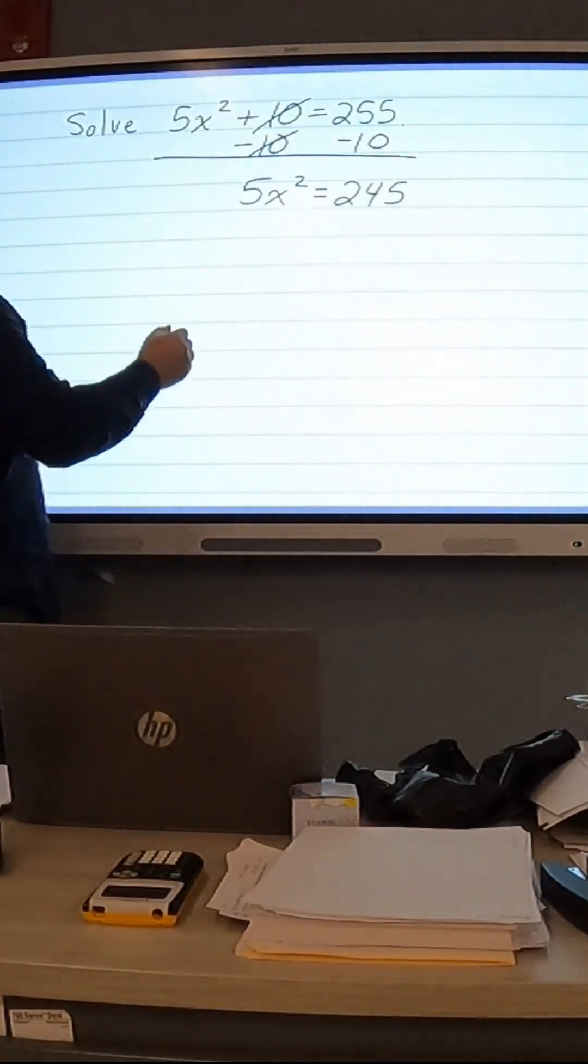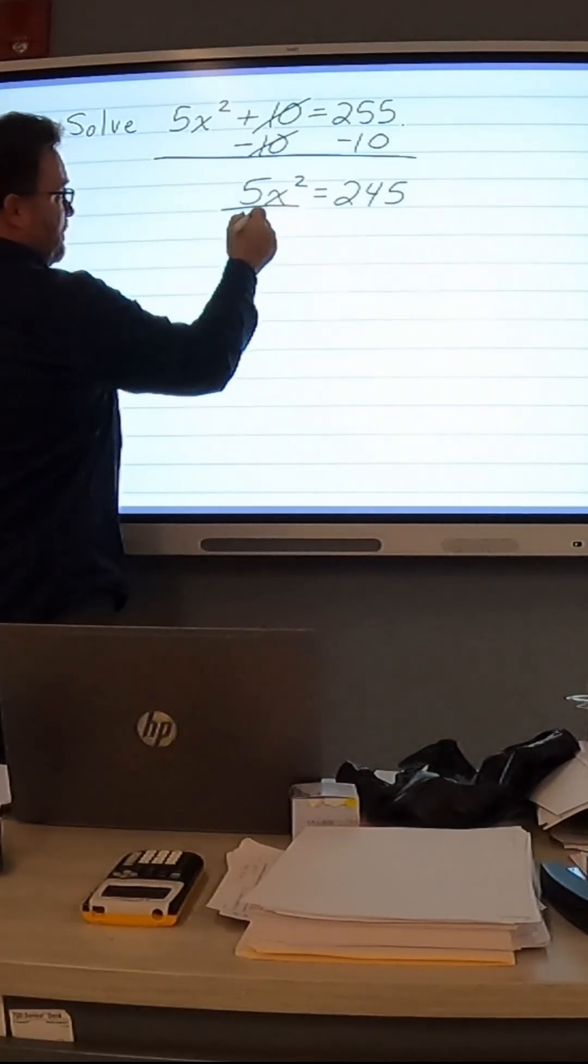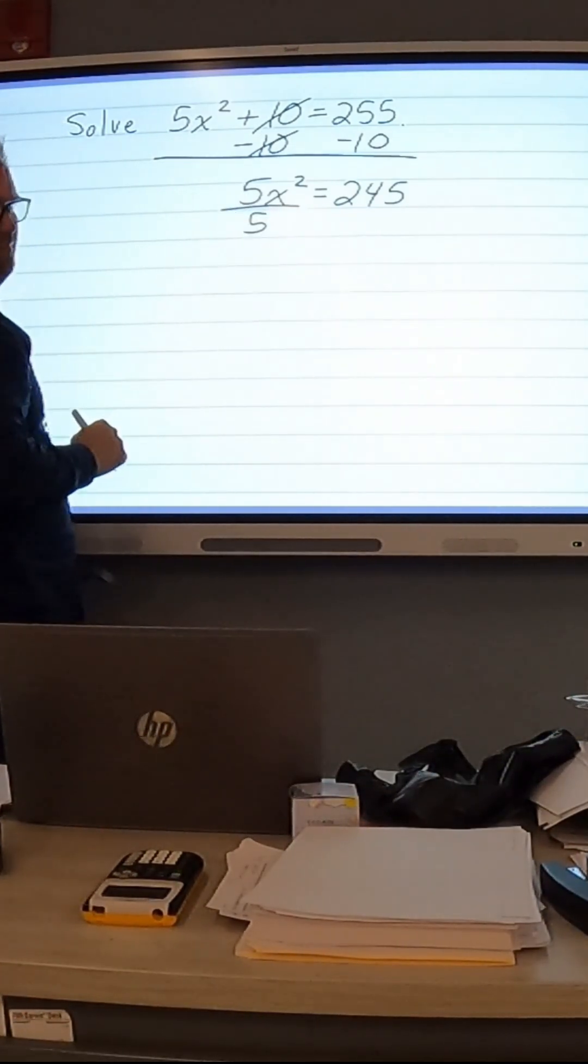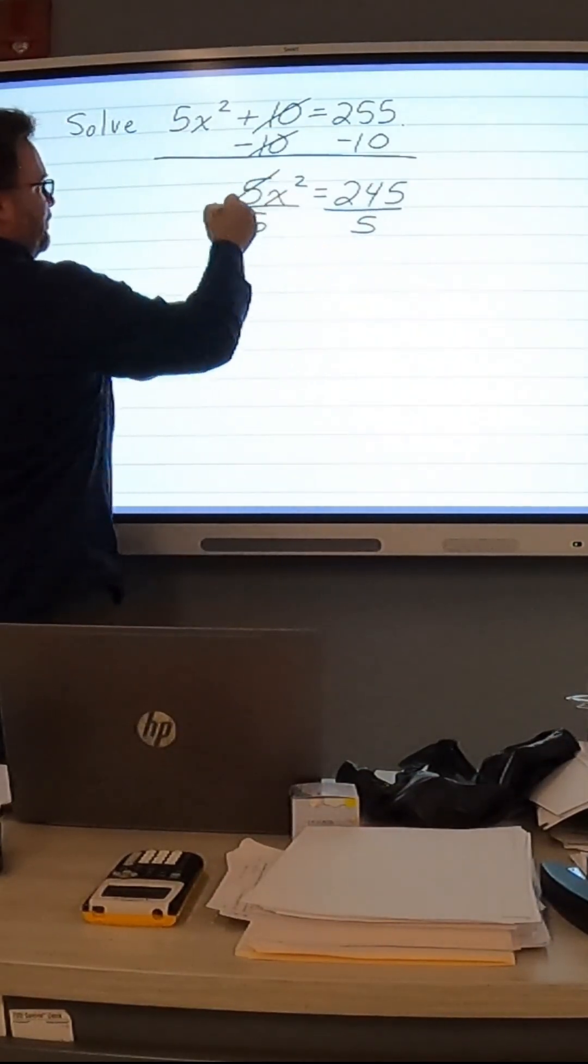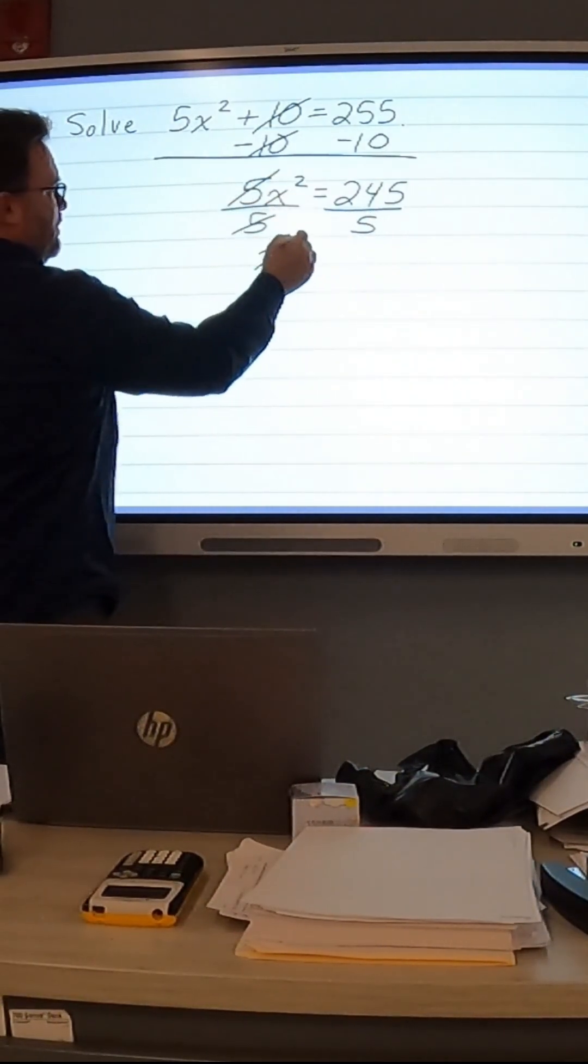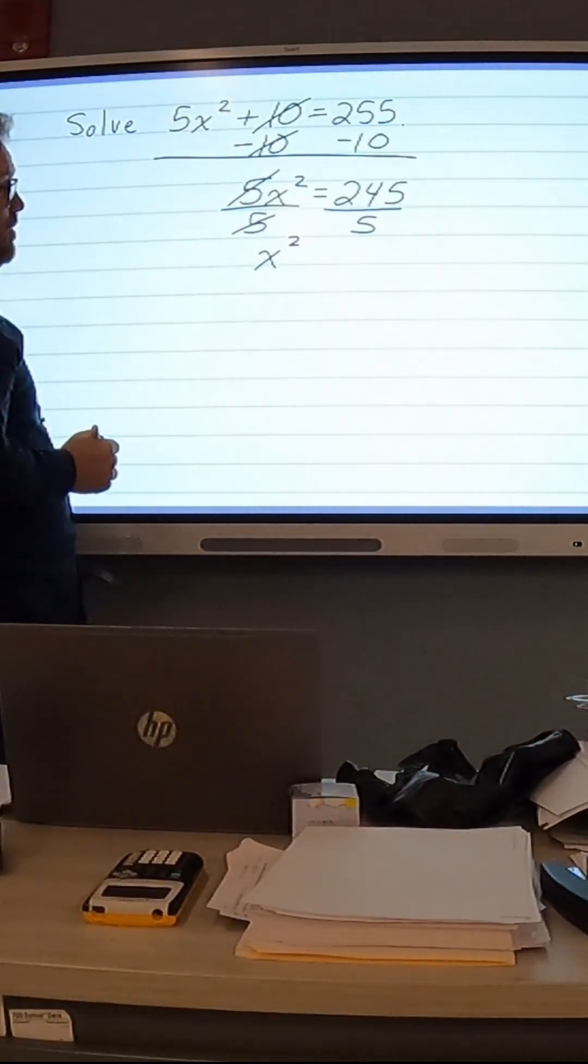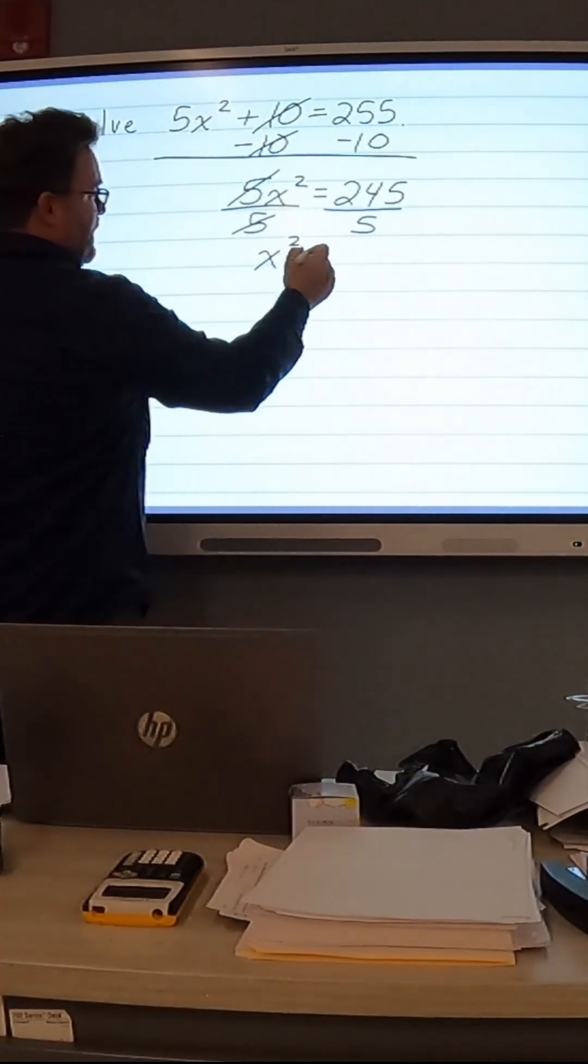We're then going to divide both sides by 5 to get rid of the multiplication of 5 on x squared. And we're going to be left with x squared equals 245 divided by 5, which is going to be 49.